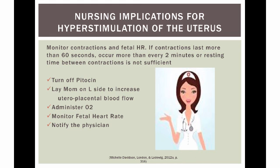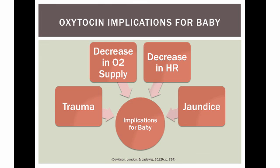Nursing implications for hyperstimulation of the uterus include monitoring contractions and fetal heart rate. If contractions last more than 60 seconds, occur more than every two minutes, or resting time between contractions is not sufficient, the nurse should turn off the Pitocin, lay the mother on her left side to increase placental blood flow, administer oxygen, monitor fetal heart rate, and notify the physician.